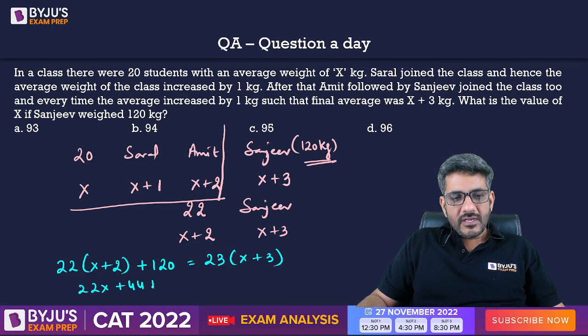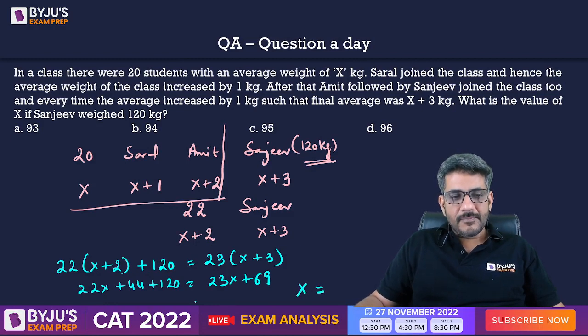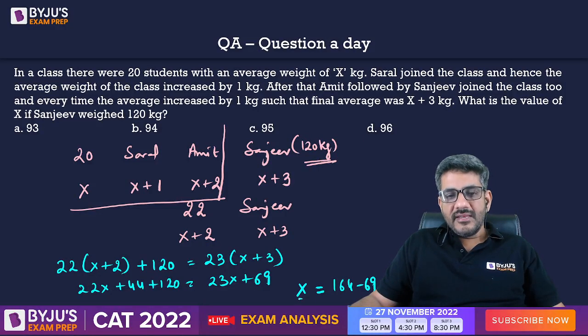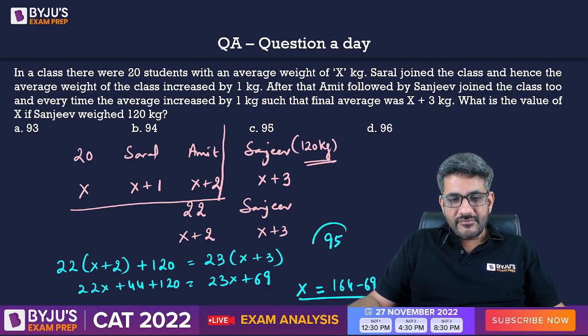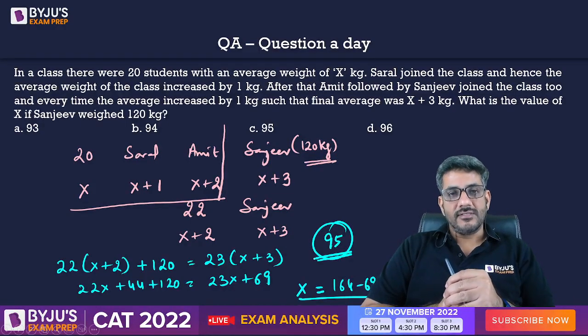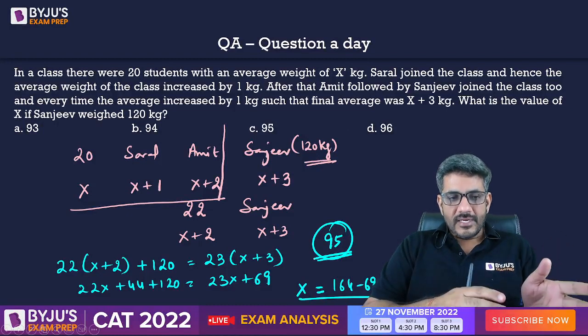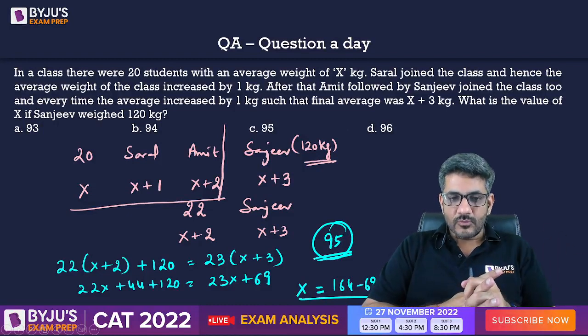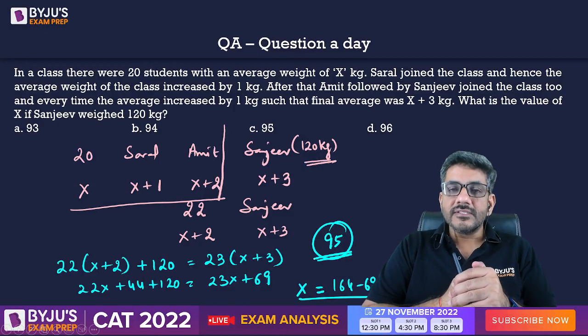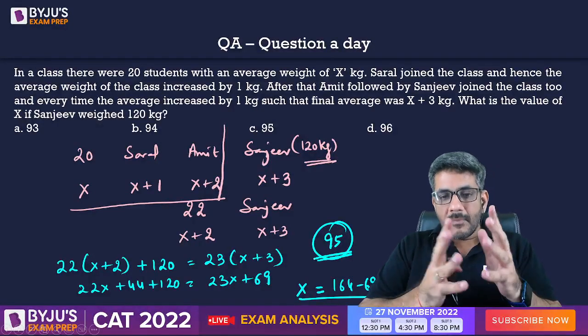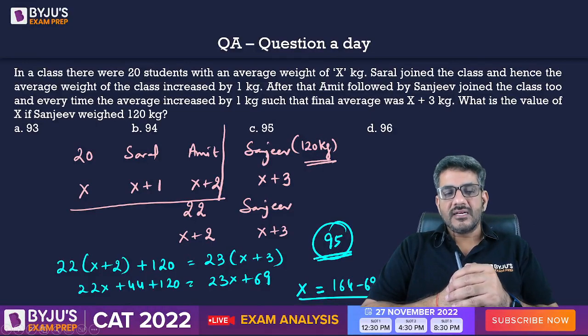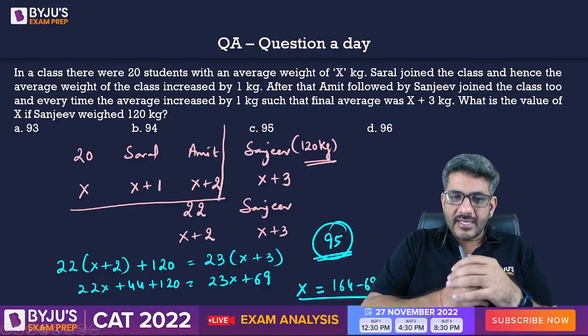22x plus 44 plus 120 is equal to 23x plus 69. 23x minus 22x that is equal to x. And on the left side, I have 164 minus 69. This gives me the value of x as 95. So, 95 is the correct answer for this question. I hope you got it. It is 120 plus 44 which is 164 minus 69. That gives me 95 as the correct answer. That is the value of x that we have got.